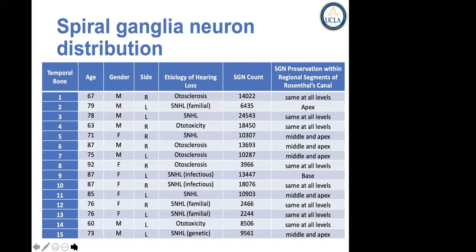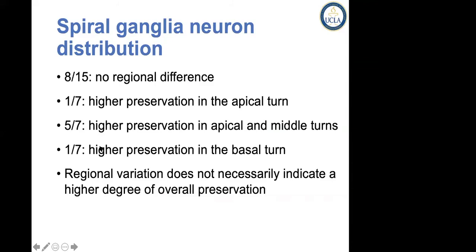When we looked at the distribution of spiral ganglion neurons from these 15 patients, 8 bones out of 15 really didn't have any regional difference. One bone had much higher preservation in the apical turn, and five bones out of seven had higher preservation in the apical and middle turns. One bone had higher preservation in the basal turn. So it's not consistent, and depending upon where the neurons are, it's going to make a difference.